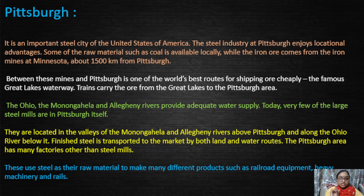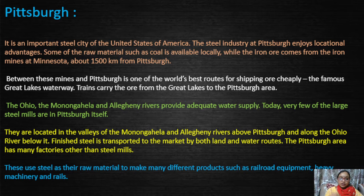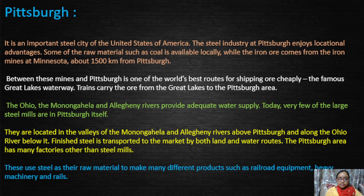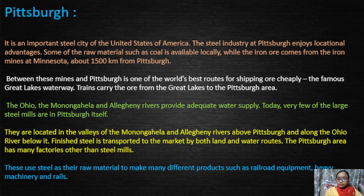There are five Great Lakes: Superior, Michigan, Huron, Erie, and Ontario. This is a good example of inland waterways — ore can be transported from other places through the Great Lakes to Pittsburgh. The Ohio, Monongahela, and Allegheny rivers also provide adequate water supply, similar to what we have seen in Jamshedpur.